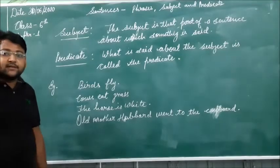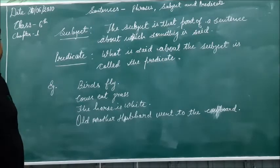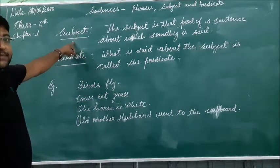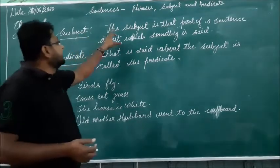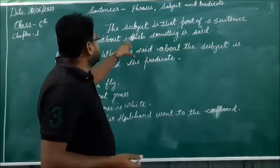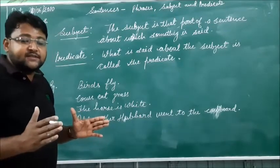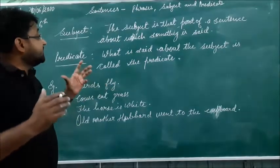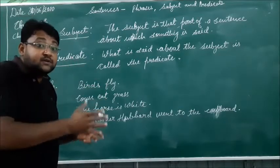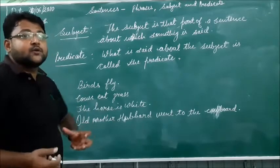Subject and predicate. What is the subject and what is the predicate in a sentence? The subject is that part of a sentence about which something is said. The predicate is saying something about the subject. That part about which something is said is called the subject.